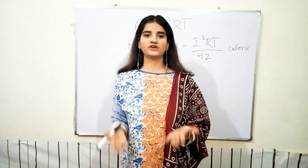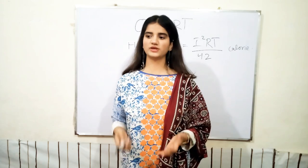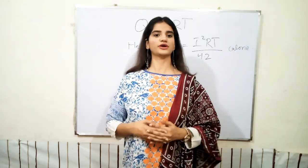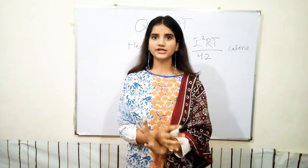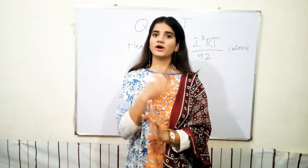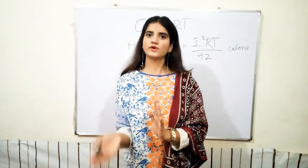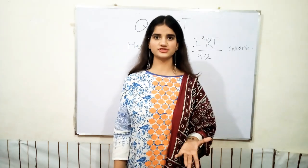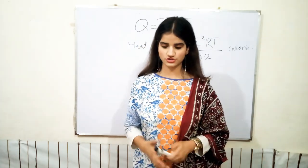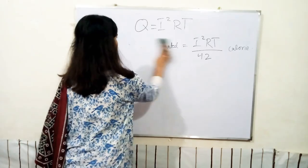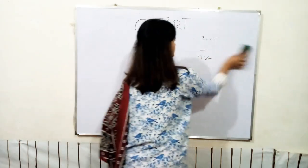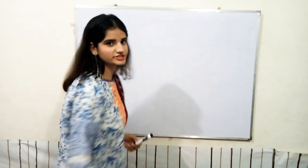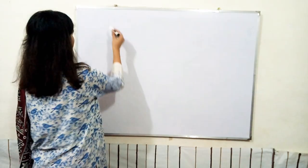We now know what happens when one calorie of heat is measured. The main topic is what happens when we attach series resistance and parallel resistance in our circuit. First, we will learn about series and then parallel, and we will make a good comparison between both of them.